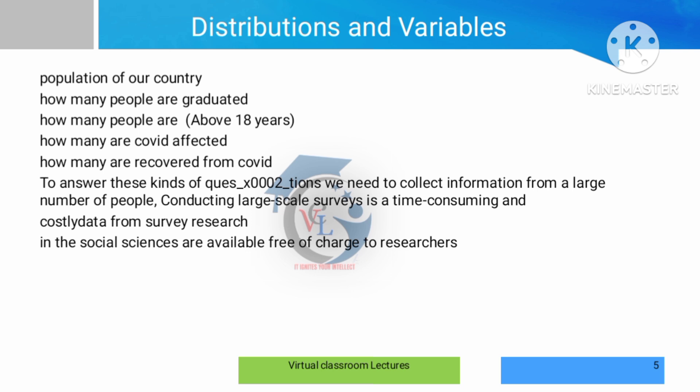Distributions are already detailed in previous videos. Distributions describe how values in a dataset differ and how they are distributed. For example, if we look at a country, there are several populations — that is a single value or variable. If it is a single variable, it means univariate analysis. If it is two variables, it means bivariate analysis. If it is multiple variables, it means multivariate analysis.